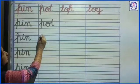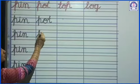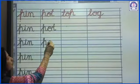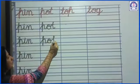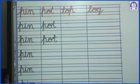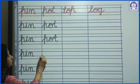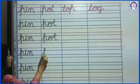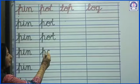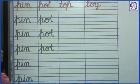Again write down. Corner se hi start karna hai. Blue line ko touch karna hai. P. O. T. Pot. P-O-T pot. Pot.